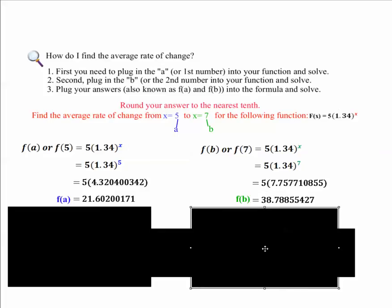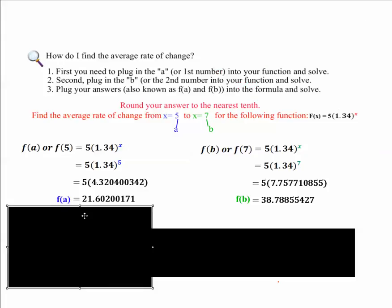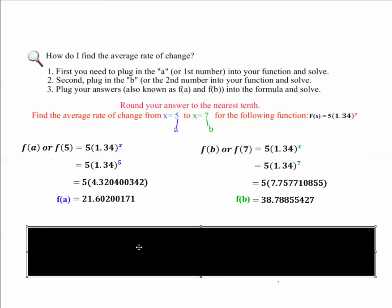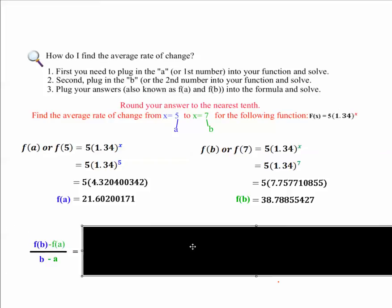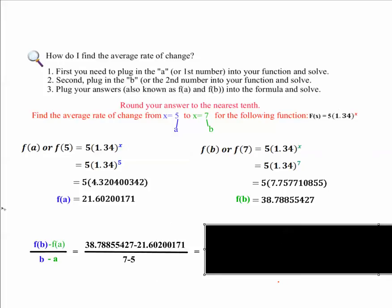So let me get rid of these boxes here so we can see what we do next. And the third step is actually plugging it into your formula and solving. This is probably the easiest part. I call it plug and chug. So we're just going to plug our answers into these spots and we're going to get going. We have our formula, F(b) - F(a) over b - a. So we're going to plug our values that we already found into the formula.